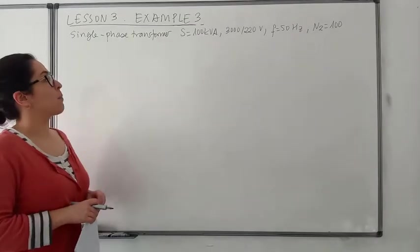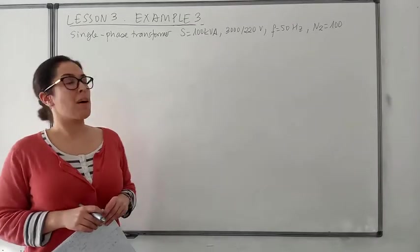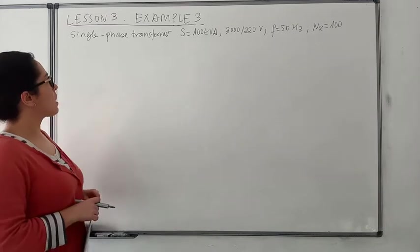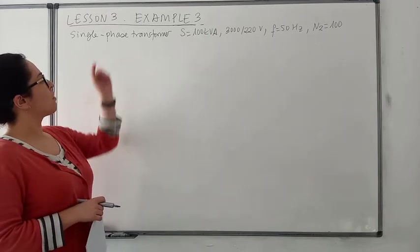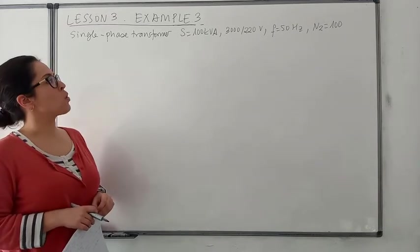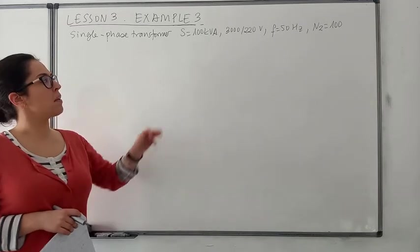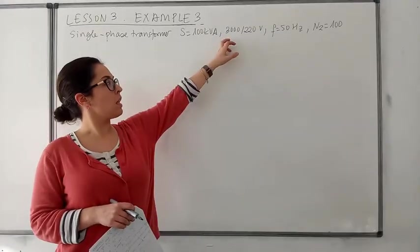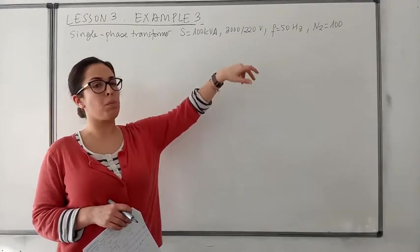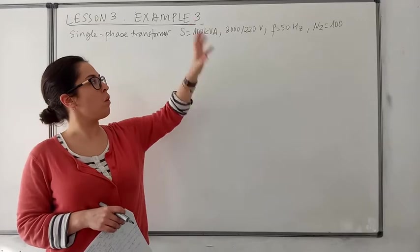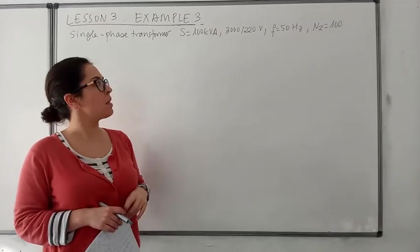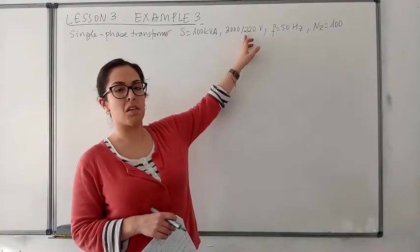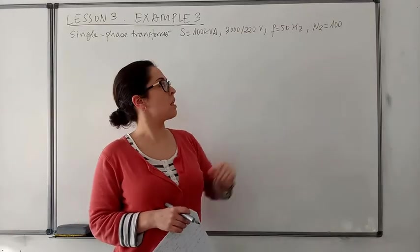Hi everyone. Now we are in example 3 of lesson 3. In this example we have a single phase transformer whose rated power is 100 kVA and it has 3000 V of voltage in the primary winding and 220 V in the secondary winding.